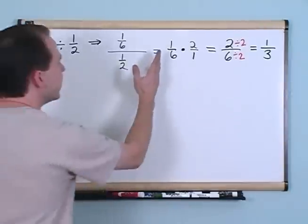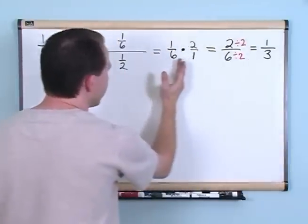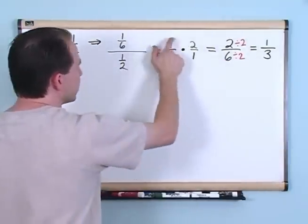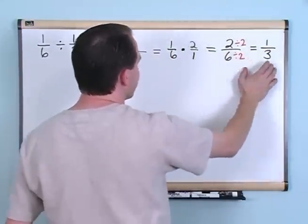Notice that from here on, it was just a simple multiplication problem. You just multiply the top, multiply the bottom, simplify the fraction, and that's it.